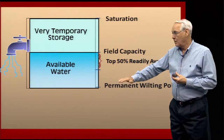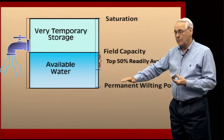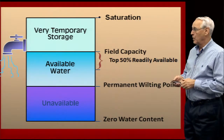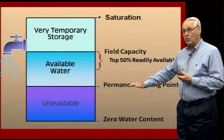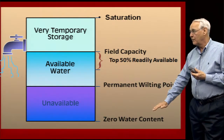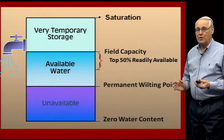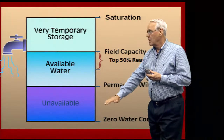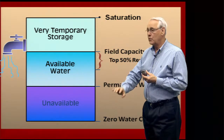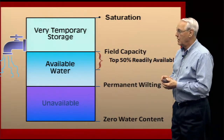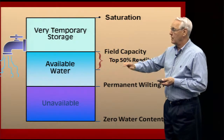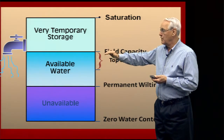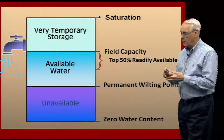Plants can take water down to the lower part of that range, but it takes a lot more energy and puts them under some mild stress. Below the permanent wilting point, there is still water in the soil — if you put soil in an oven at about 200 degrees Fahrenheit, you can drive water off. But that water is held so tightly that plant roots cannot extract it; that's called unavailable water. The water available to the plant is between field capacity and permanent wilting point, but for irrigation management, we're really thinking about between field capacity and about 50% of the readily available water.